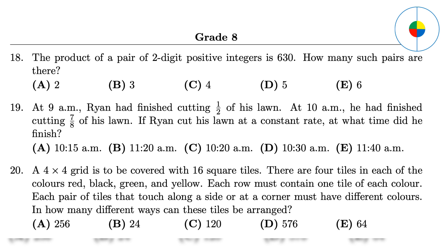Question 20: This is quite complex. If you try several times according to the rules, you will know that the positions of the four tiles in rows 2, 3, and 4 are completely determined by the tiles in row 1. So it's basically the different combinations of row 1, which is 4 times 3 times 2, equals 24.